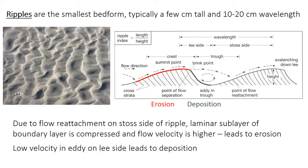Ripples form because of erosion on the shallowly sloping stoss, or upstream, side. The flowing water path detaches from the sediment at the crest of the ripple at the brink point, then reattaches at some point along the stoss side. Where it reattaches, the laminar sublayer of the boundary layer becomes compressed and thinner, so thinner flow leads to higher velocity, which is more able to erode and transport sediment. There is an eddy in the trough — a backwater where water swirls slowly — and that slower velocity on the lee face leads to deposition. Because of this pattern of erosion on the stoss side and deposition on the lee face, ripples migrate downstream.